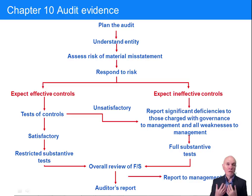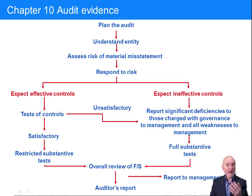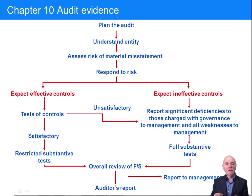Whichever route we're taking, we need evidence. If we're going down the left-hand route, we need evidence that the controls are effective and operating consistently during the year. If we're going down the right-hand route, we need direct evidence that the figures in the financial statements are true and fair and don't include any material misstatements. Both routes require evidence.